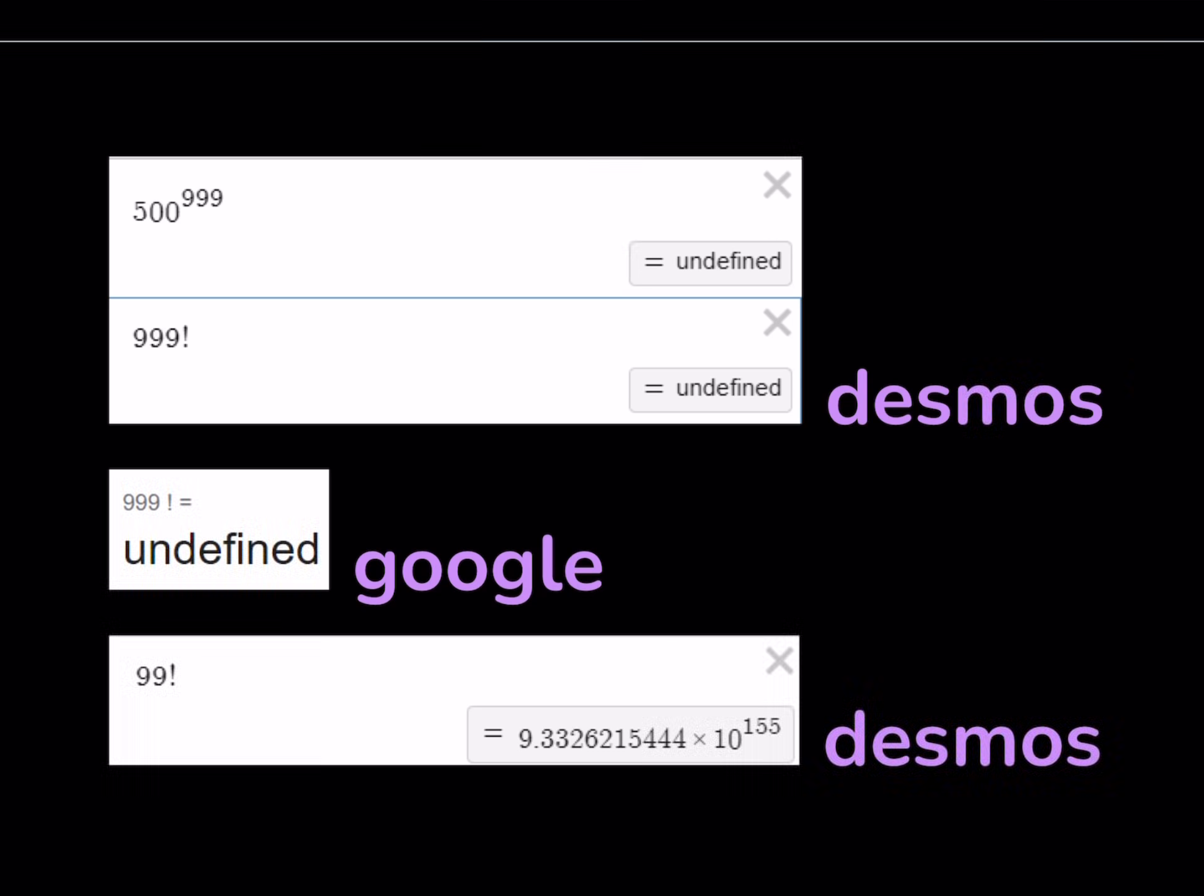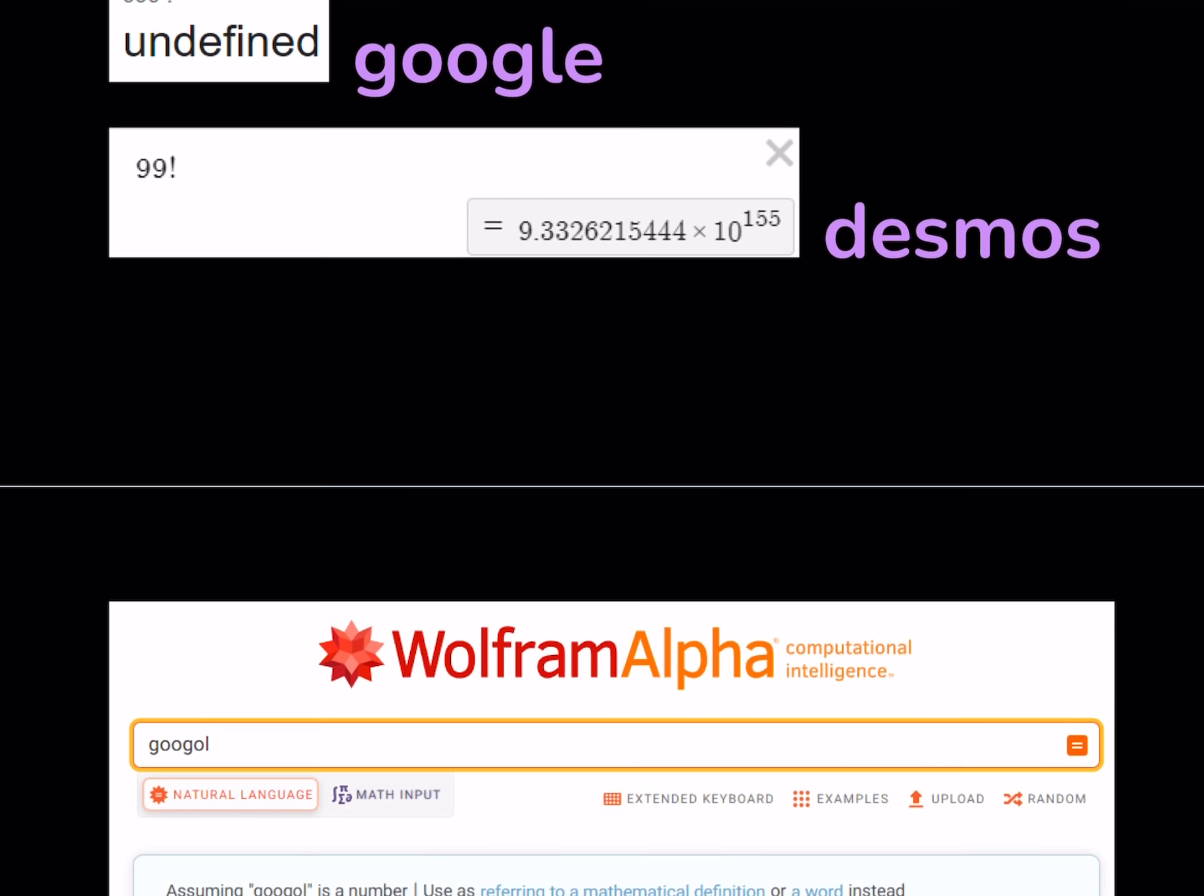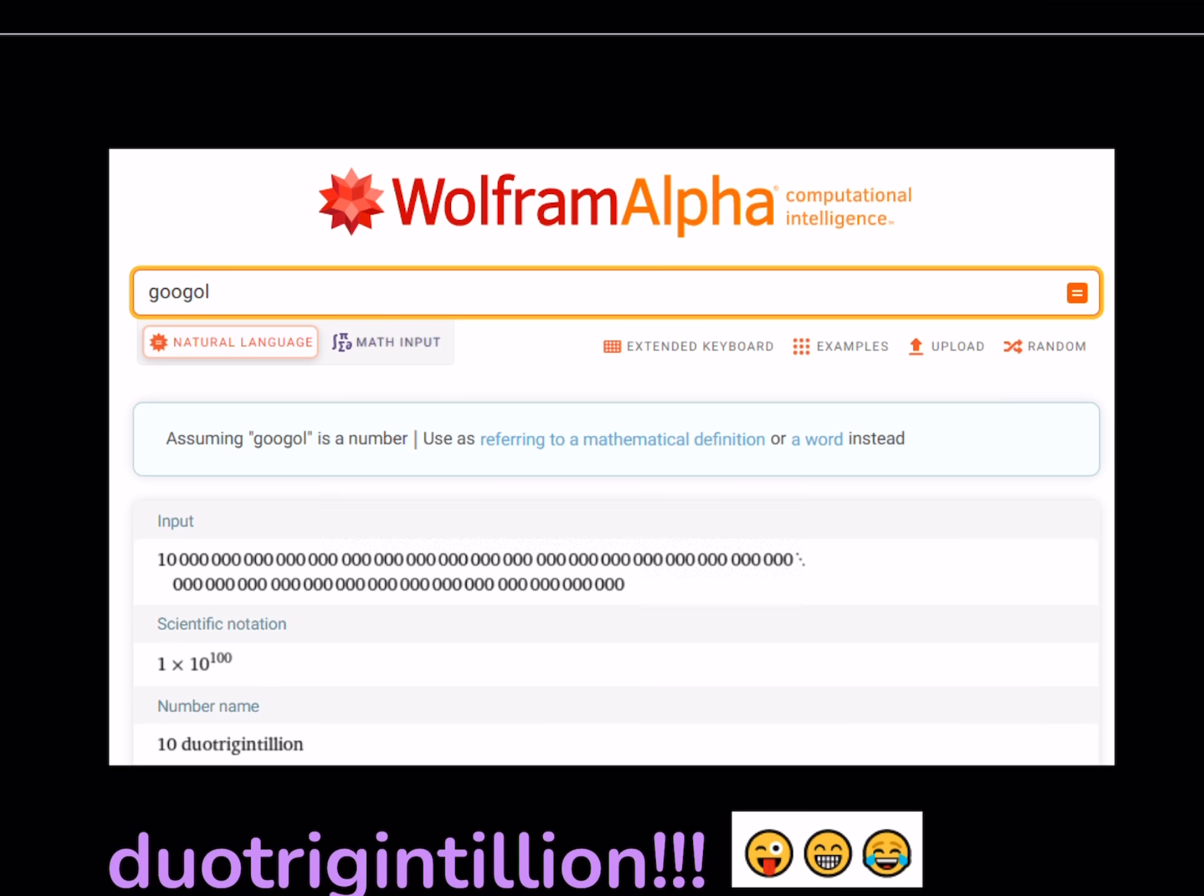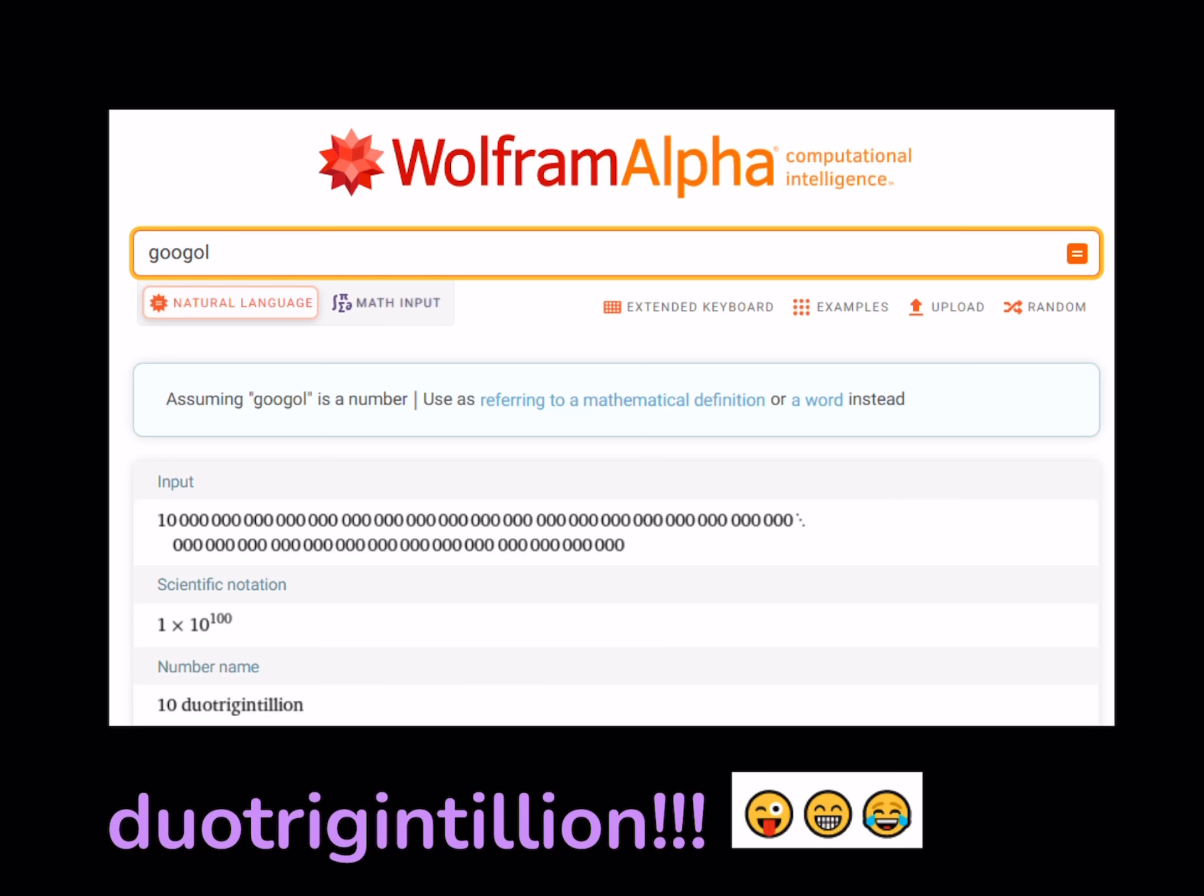But when you look up 99 factorial we get a number, a very gigantic number by the way, with 156 digits. So even 99 factorial is super duper large. Imagine how large this number can be. And another large number that is well known is googol, not the website Google but the number googol, and it has basically 100 zeros that follows 1. Anyways, let's get started with our numbers.